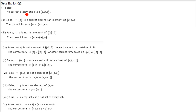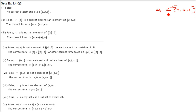Next question: which of the following statements are correct? Write a correct form of each incorrect statement. First: a ⊆ {a, b, c}. This is false — a is an element here, so a ∈ {a, b, c} is the correct form.